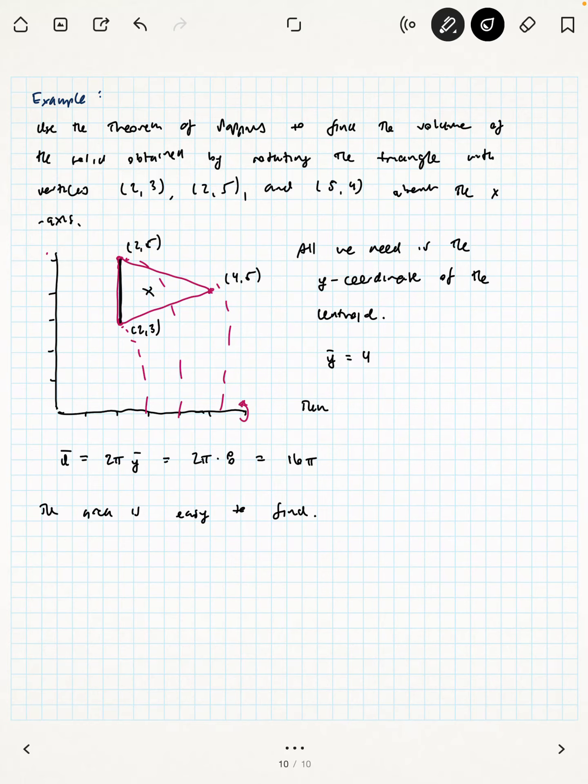The area is just as easy to find where you don't need to resort to any calculus here. All we need to use is the area of a triangle. So if we take this length to be the base and this length to be the height, we know that this is going to be one-half times 2 times 3, which ends up being 3 units squared.